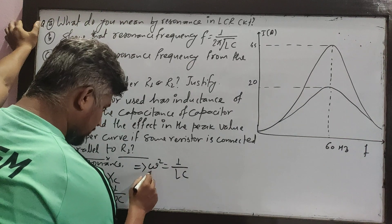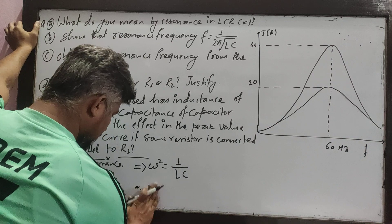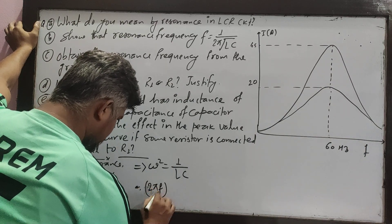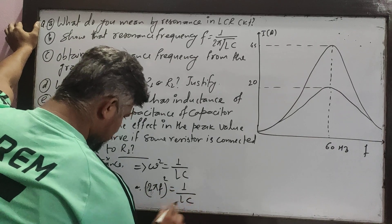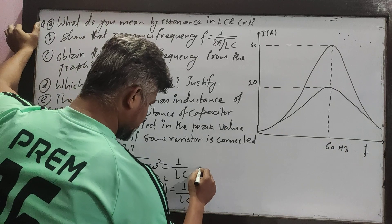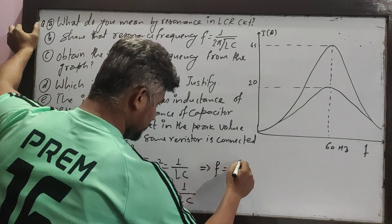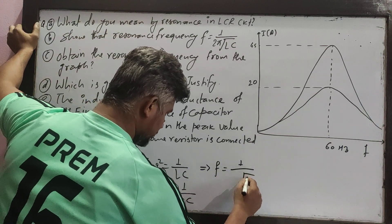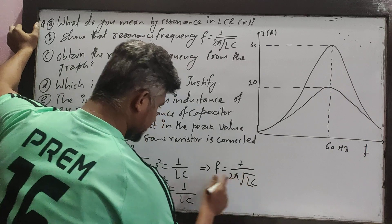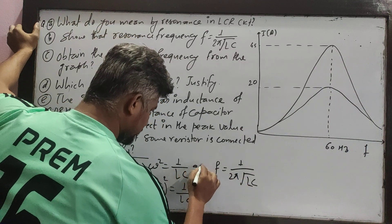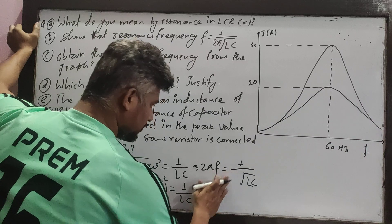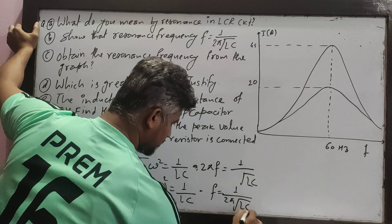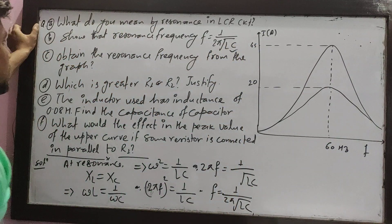So, substituting omega equals 2 pi f, we get (2 pi f) squared is equal to 1 by LC, which implies f is equal to 1 by 2 pi root over LC. Here is the derivation — very easy, short part.